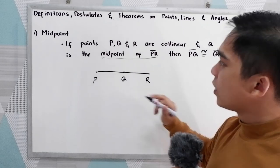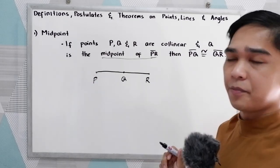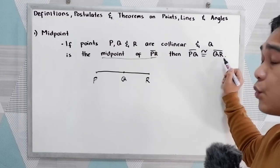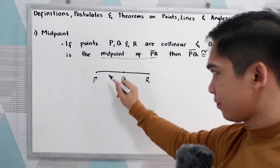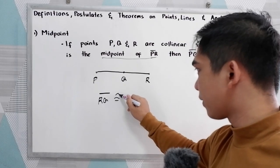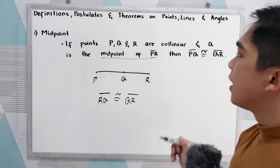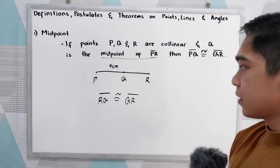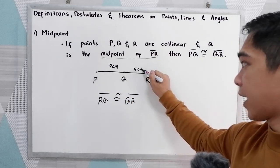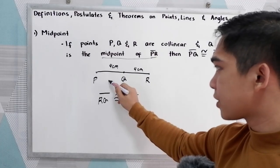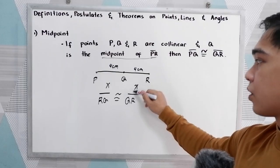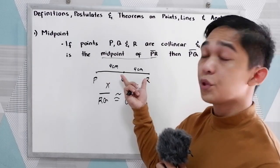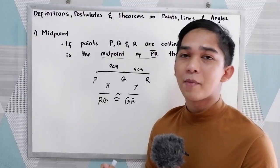So that means Q lies between point P and point R. Then segment PQ is congruent to segment QR. Let's say if PQ is 4 cm, therefore QR is also 4 cm. If PQ measures X, therefore QR also measures X. So that is the definition of midpoint — it divides the segment into two congruent or equal parts.